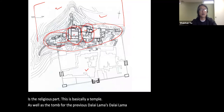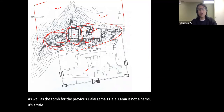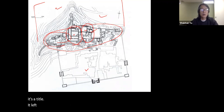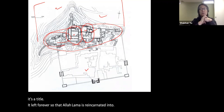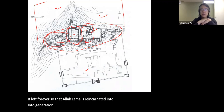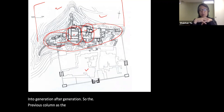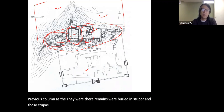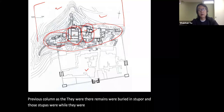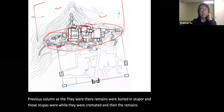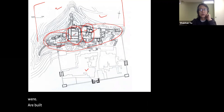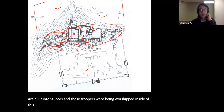Dalai Lama is not a name but a title — it lives forever through reincarnation, generation after generation. The previous Dalai Lamas were cremated and their remains were built into stupas that are worshipped inside this complex. So this is basically the religious center.